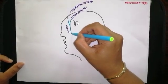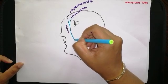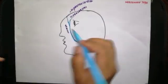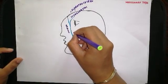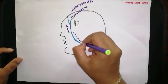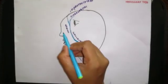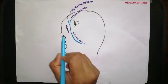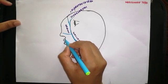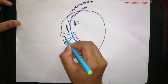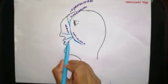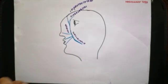The angular vein then continues as the facial vein in the face. The veins draining the ala of the nose, and the superior labial vein and the inferior labial vein, drain into the facial vein.